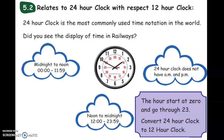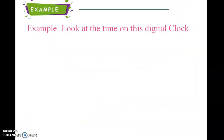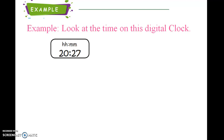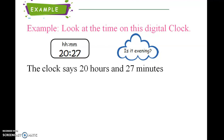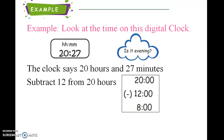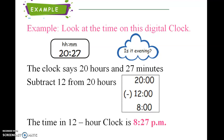Convert 24-hour clock to 12-hour clock. For example, look at the time on this digital clock: 20 hours 27 minutes. Is it evening? Yes — the clock says 20 hours and 27 minutes. Separate 12 from 20 hours; the answer is 8. The time in 12-hour clock is 8:27 PM.